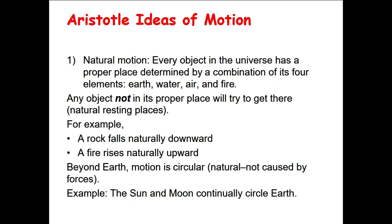For example, a rock would fall naturally downward because that's the natural motion of a rock. A fire would rise naturally upward because that's its natural motion. Beyond Earth, in space, natural motion is circular, so the Sun and the Moon would continue to circle the Earth according to Aristotle.